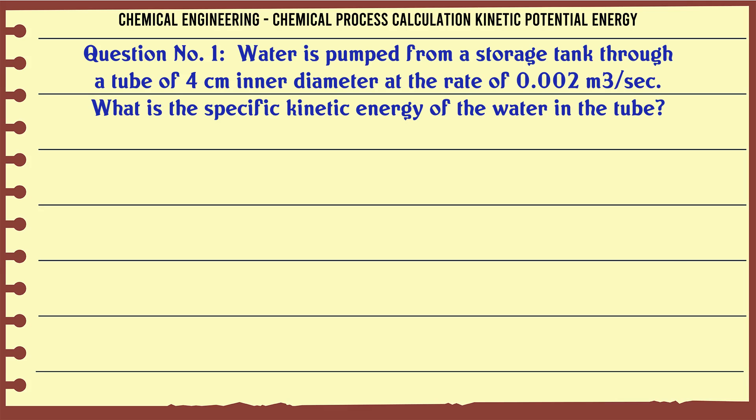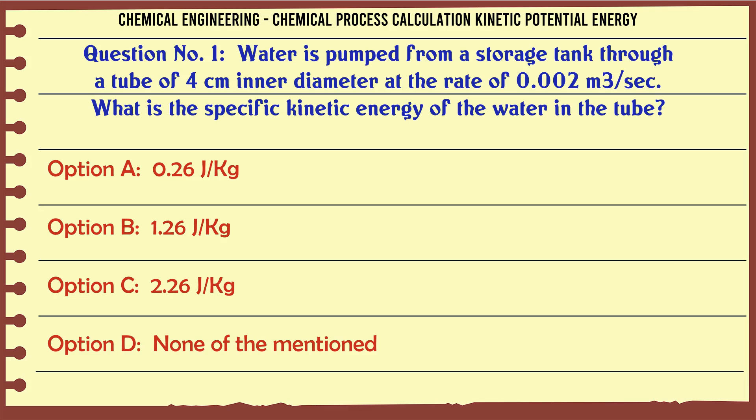Water is pumped from a storage tank through a tube of 4 cm inner diameter at the rate of 0.002 m³/sec. What is the specific kinetic energy of the water in the tube?